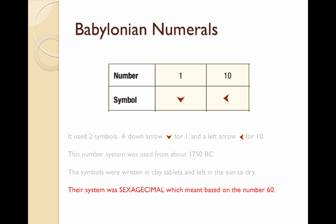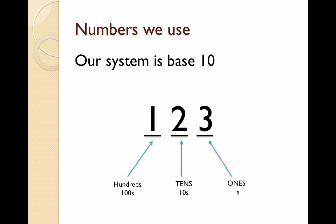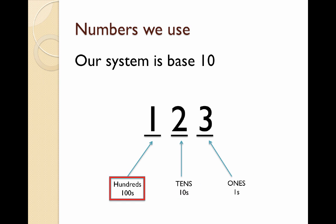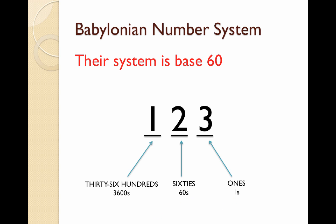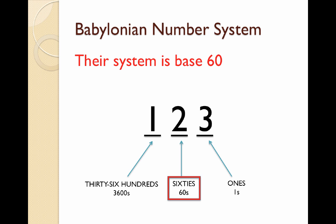Let me go through an example. Take the number 123. Our system is the base ten system because it uses place value which goes up as powers of ten. The first column is your ones, the second column your tens, then your hundreds and so on. Every time you go up a place value from right to left you multiply by ten. In their number system, they still start with a ones column in the smallest value, but then it jumps to the sixties — that's sexagesimal, base 60.